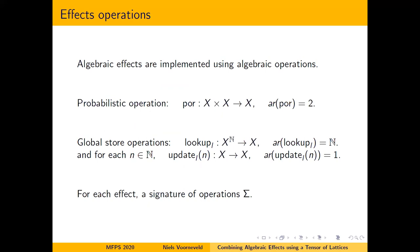Effects are implemented using algebraic operations: at certain moments in a program we have terms that combine other programs into an effect. For instance, for a randomized algorithm we might use a probabilistic-or operation, which combines two different continuations into a single program that randomly draws a bit — zero or one — and if it's zero continues one way, and if it's one continues another way. This operation has two different possible continuations, so it has arity 2.